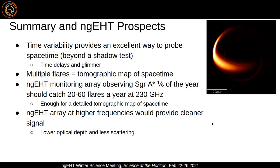In summary: this time variability and lensing experiments really provide an excellent way to probe spacetime and provide new tests of general relativity. This approach doesn't rely on having extreme angular resolution that might be needed to measure higher-order photon rings. Multiple flares allow you to tomographically map spacetime, and the NGEHT array would provide a great way to construct these catalogs quite quickly.